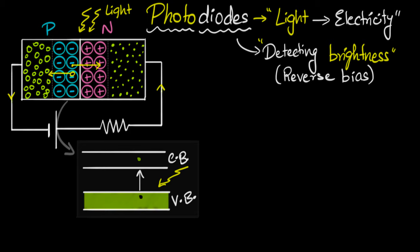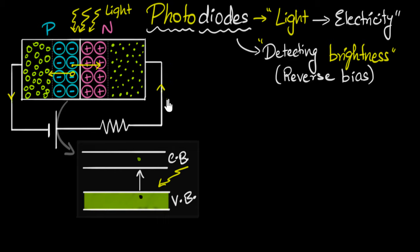Now imagine we shine brighter light. With brighter light, there are more photons being absorbed per second, meaning more electron-hole pairs formed per second, and therefore the current will increase. So with more light, we get more current — which means just by looking at the current, we can tell how bright the light is. That's how photodiodes detect brightness using reverse bias: more current means more brightness.